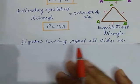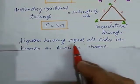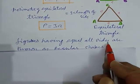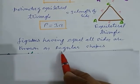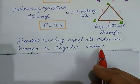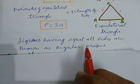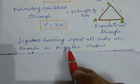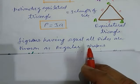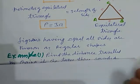So this is clear that figures having equal all sides are known as regular shapes. And these are regular shapes. We can take a regular pentagon that is having all five sides are equal. So now we take example.